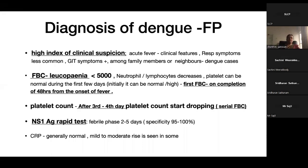The NS1 antigen rapid test for dengue is now freely available and is very useful during the febrile phase — it is included in the new guideline. CRP can be normal, though mild to moderate rises can be seen in most patients. These are the simple investigations we use to diagnose dengue.